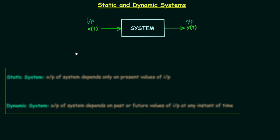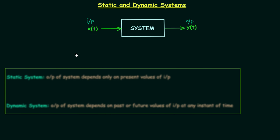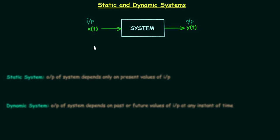The definition of static and dynamic systems is on your screen, but I don't want you to read the definitions right now. The basic notation we are using in this lecture is: input represented by x(t), output by y(t), and the system represented as a block. In this chapter, we generally don't know the properties of the system — we only know the relation between output and input, which is based on the type of system. By looking at that relation, we will determine the nature of the system.